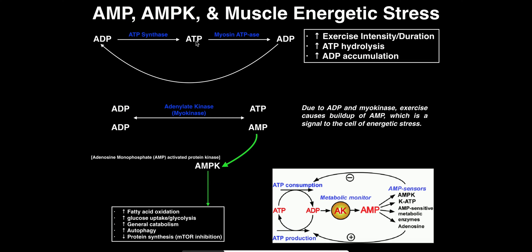ATP is used by the muscle for a lot of different processes, but one of the primary consumers of that ATP is myosin. When we have muscle contraction, myosin, in order to do the power stroke, at some point in the cycle is going to have to hydrolyze that ATP through its ATPase action, and we're going to get back that ADP. That ADP can go back and be re-phosphorylated by ATP synthase, creating a cycle.